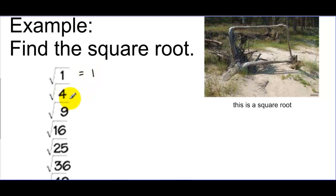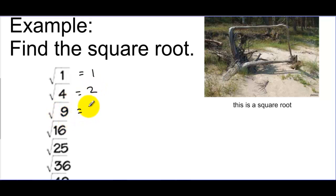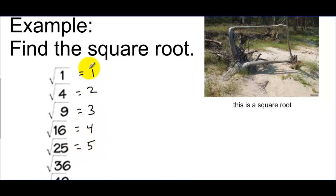Well, the answer is 1. What number, when I multiply it by itself, gives me 4? The answer is 2. What number, when I multiply it by itself, gives me 9? The answer is 3. And if you notice, as I'm going down this list, what I'm really doing is listing the positive integers in order.